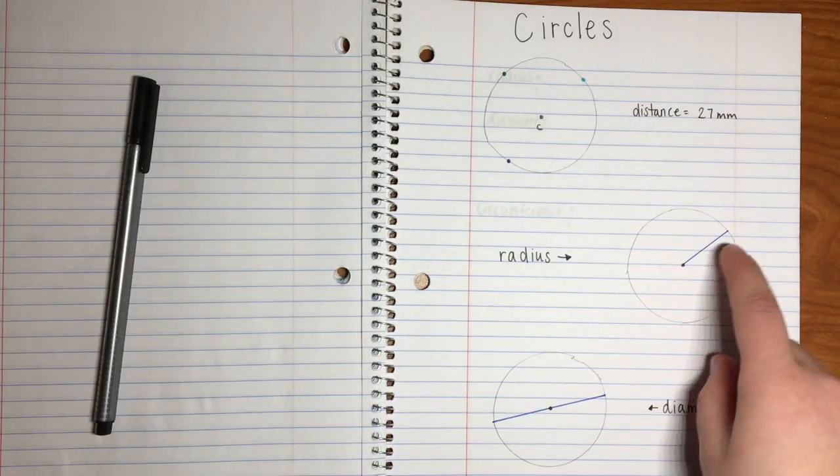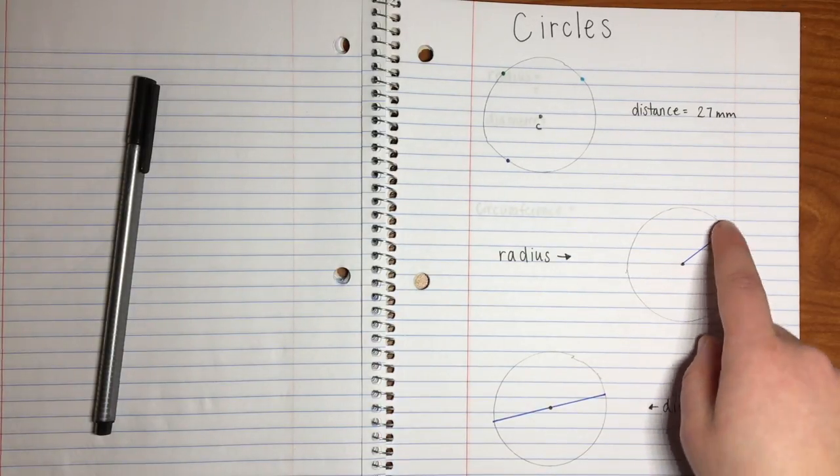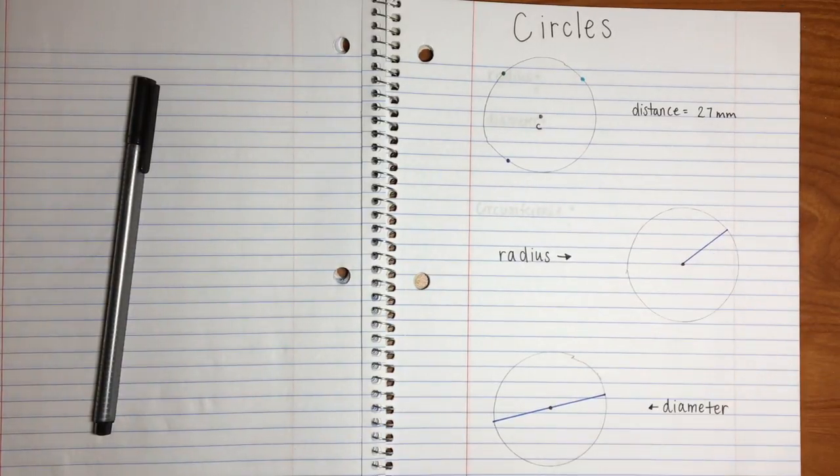So right here, we have our center point, and this is one example of a radius. There's very many that you could choose from, so this is just one example.